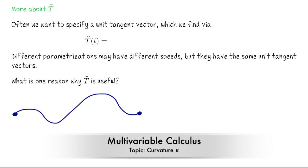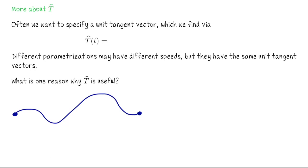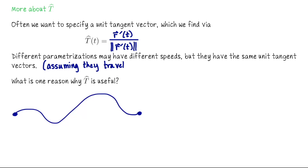Given some parametrization R, we compute the unit length tangent vector by first finding the regular tangent vector R-prime and dividing it by its own length. Since this vector is unit length, if we have different parametrizations, they may have different velocity vectors. But after we take their velocity vectors and divide them by the speeds, they would all have the same unit tangent vectors, assuming we're traveling in the same direction along the curve.